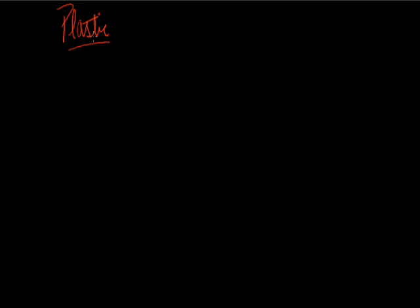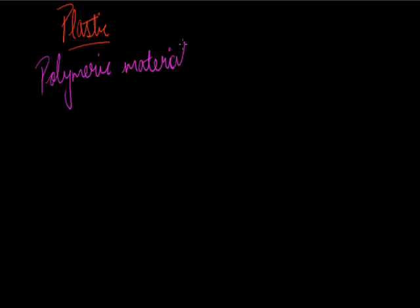Plastics. The word plastic is very common in our daily life. We know that plastic things are a very common part of every house. So what do we understand by plastic? Plastic is a polymer which can be made in any shape and size you want. So plastic is basically a polymeric material that can be set in any desired shape and size.